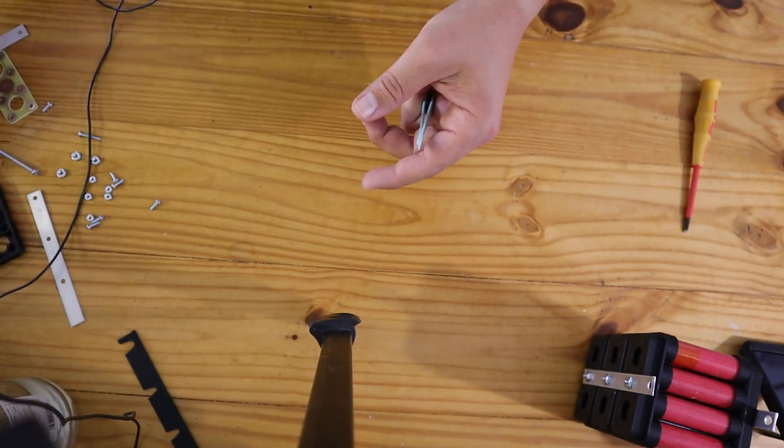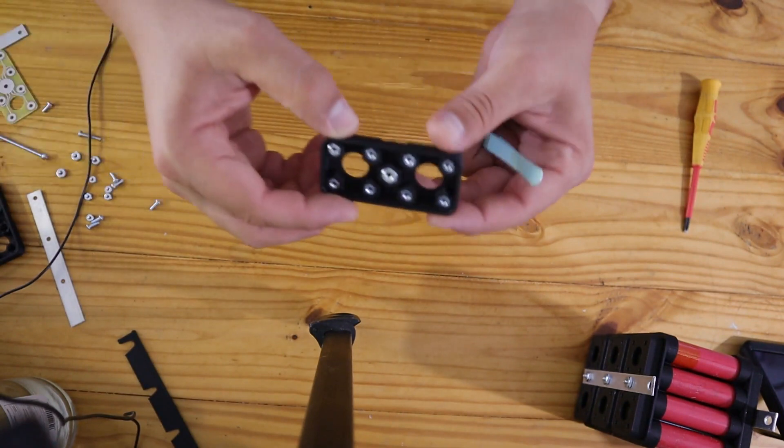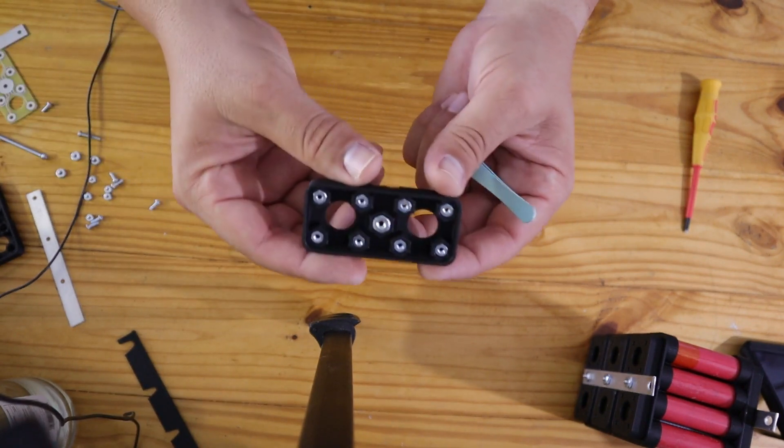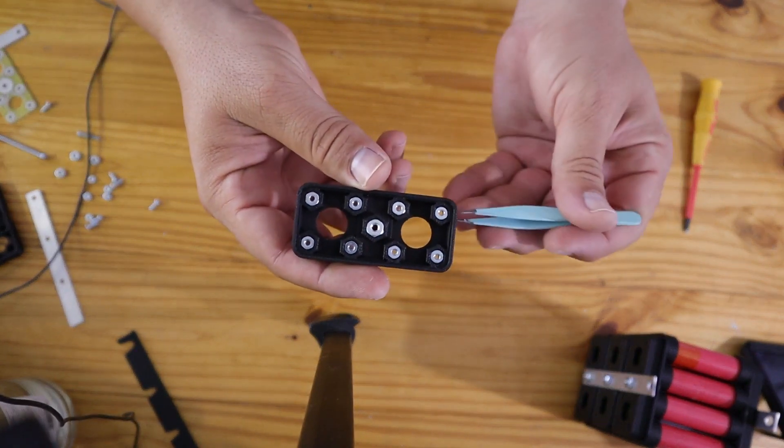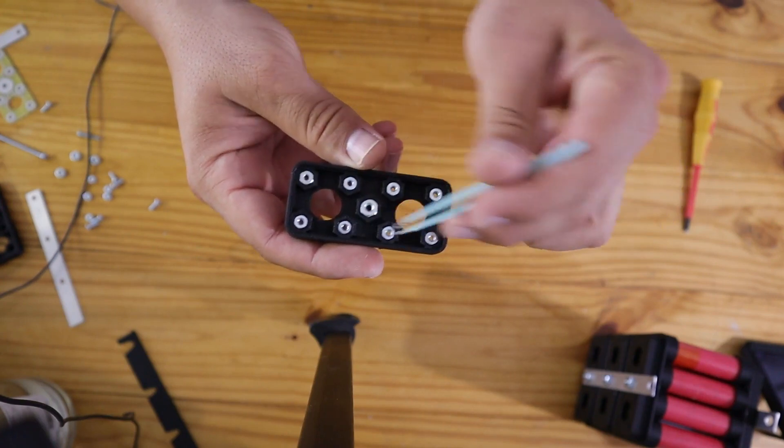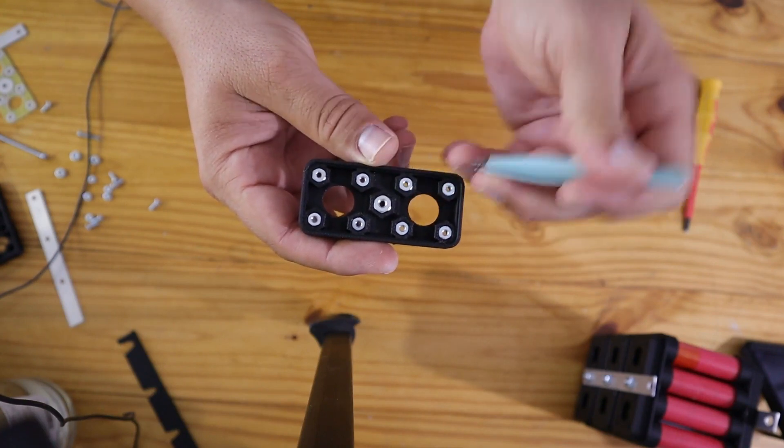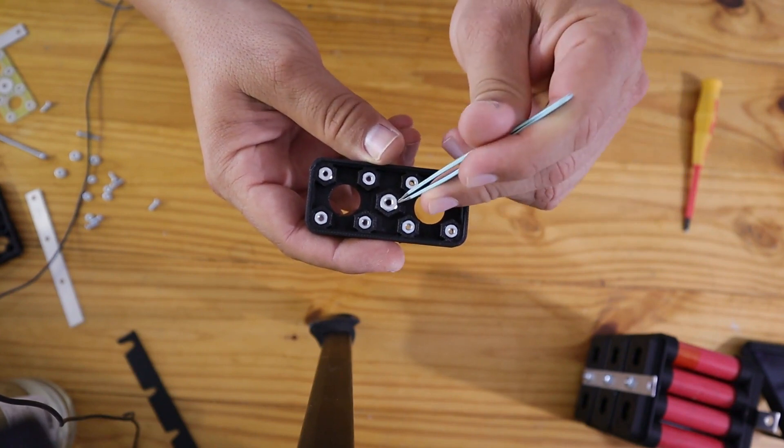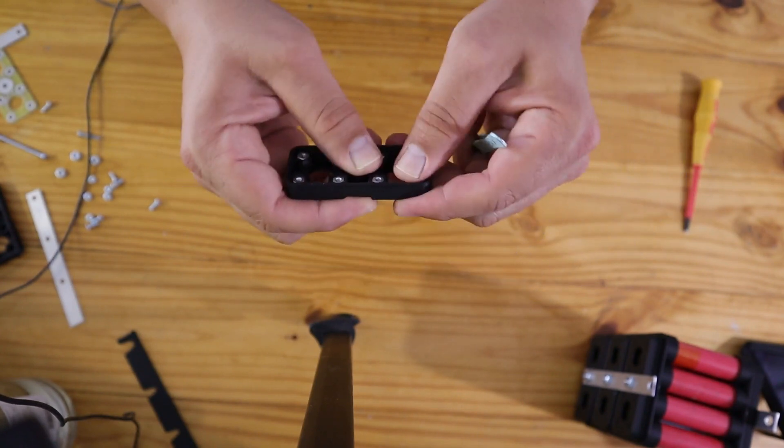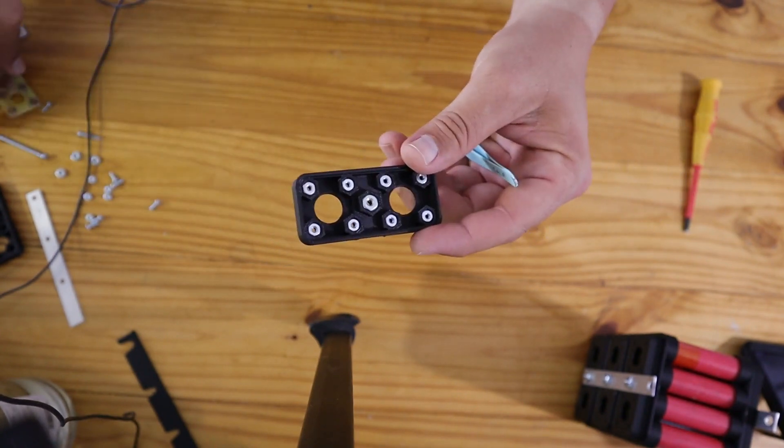Once you're done with that, you're going to end up with something that looks like this. As you can see, it has the nuts for the screws that are going to contact the cells, plus the nut for the screw that is going to contact the bus bar.